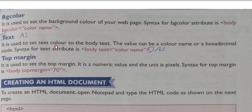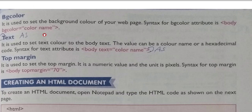The text attribute is used to set the text color of the body text. By default, text appears in black, but if you want to change it you can write: body text equal to any color name — red, blue, green, whatever you want. The topmargin attribute is used to set the top margin; it is a numeric value and the unit is pixels. If you want to display your text lower on the page, you set topmargin equal to a number like 100, 200, or 300, and your text will move down accordingly.